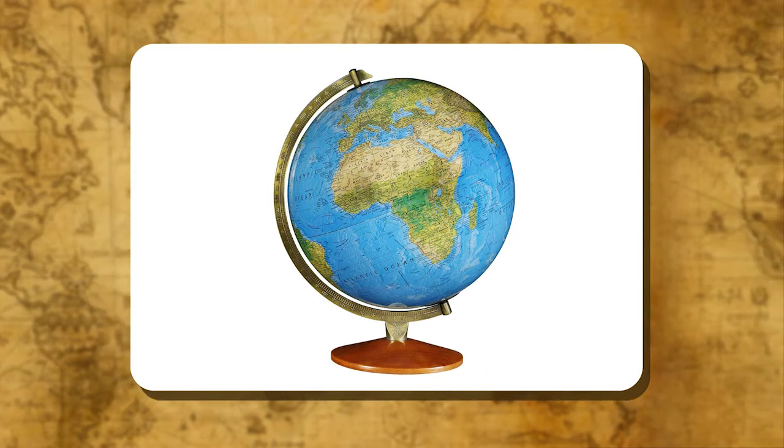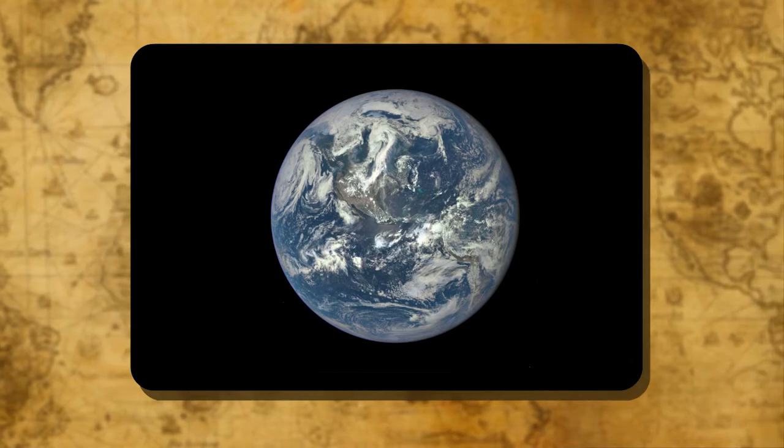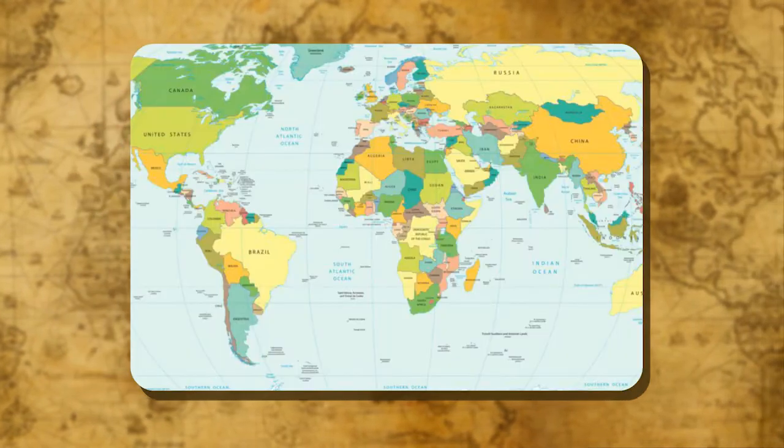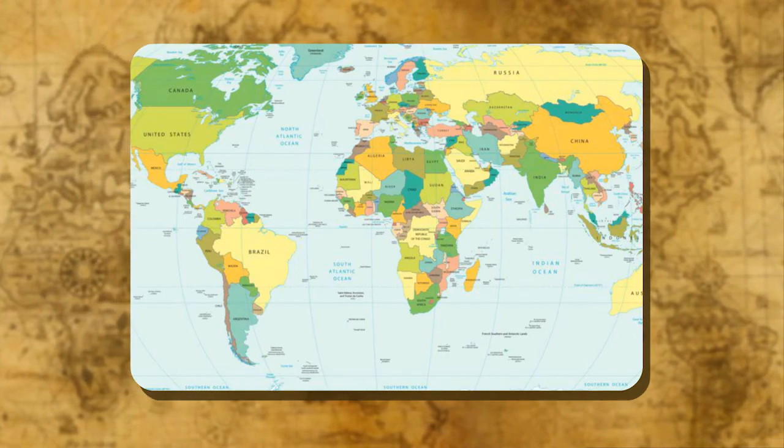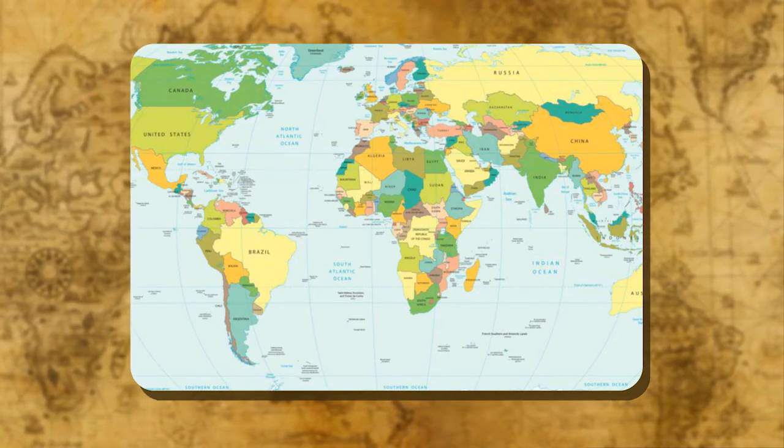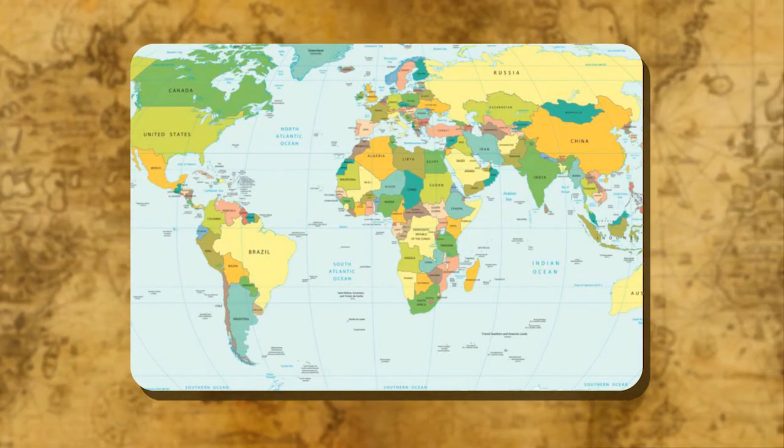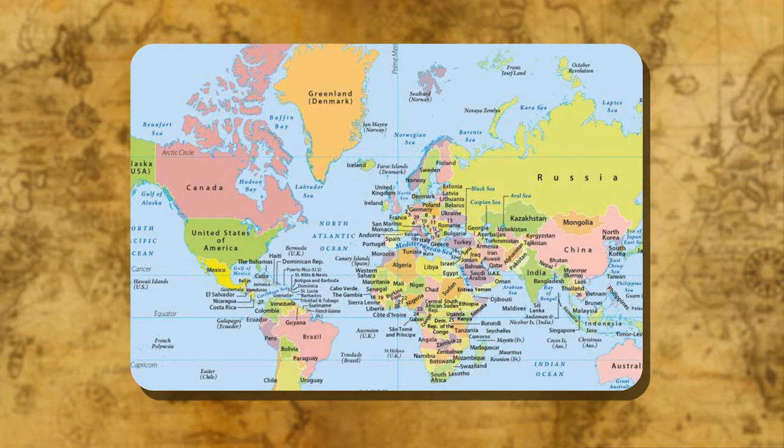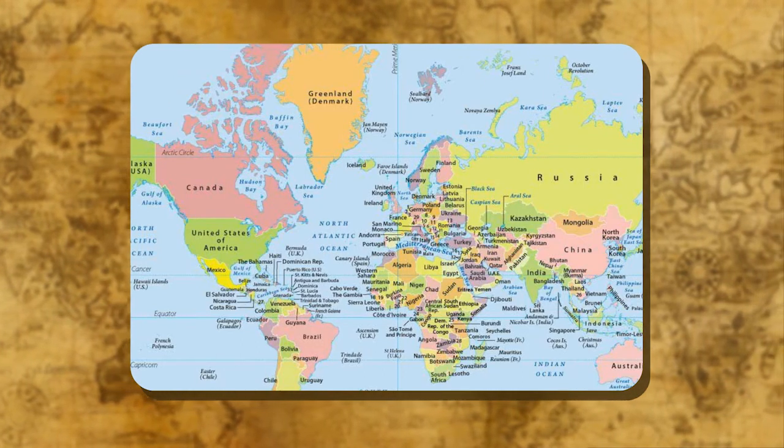Globe has some limitations as well. A globe can be useful when we talk about the earth as a whole. But when we want to study only a part of the earth, for example, a country, a state, a district or a town or a village, it is of little use. In all such cases, maps of various sizes drawn on different scales can help us.